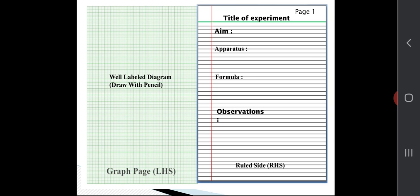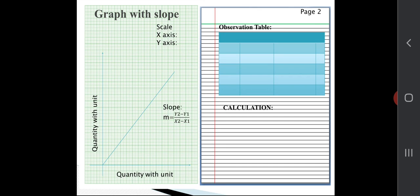These are the RHS side paper, and on the left-hand side, that is graph paper. Firstly, you will write down or you will draw the labeled diagram which is concerned to that particular practical. Basically, I need to clear you one thing: whenever you will start the experiment, start with a new page, and LHS should have the diagram on the first page.